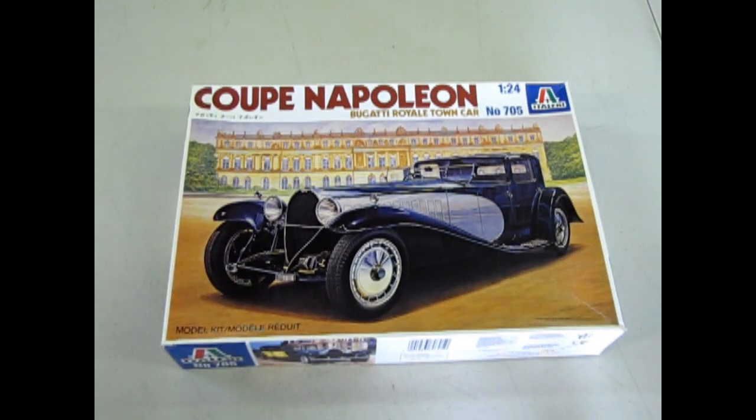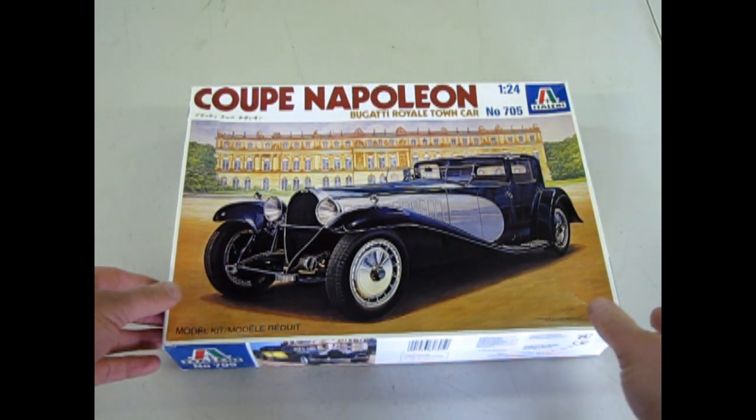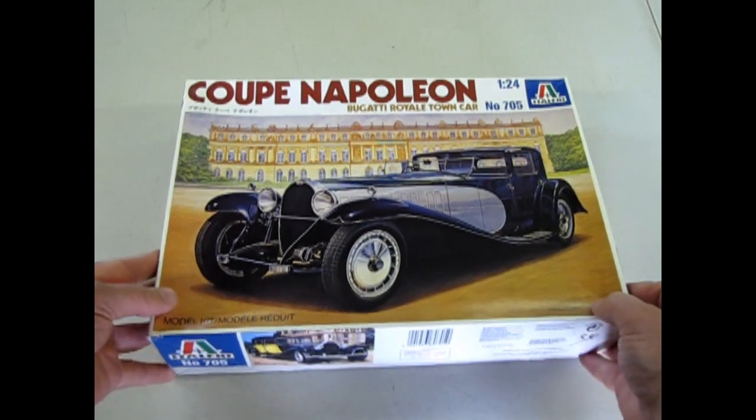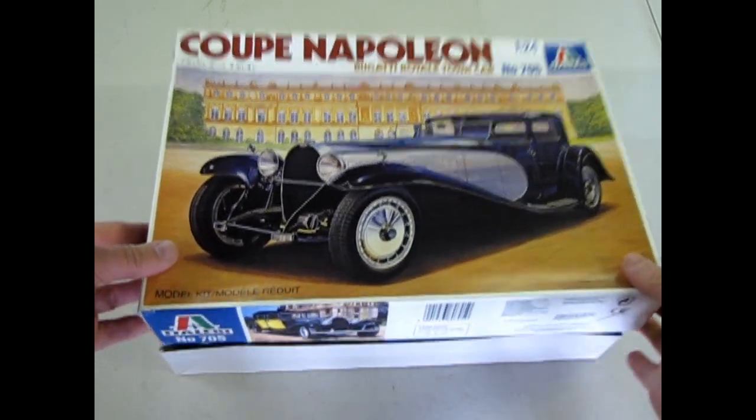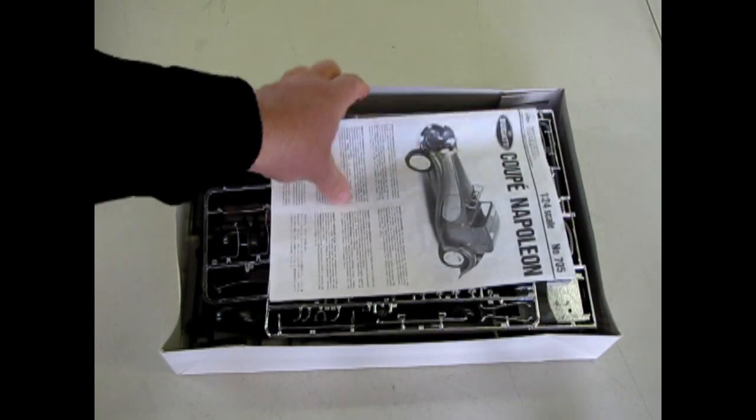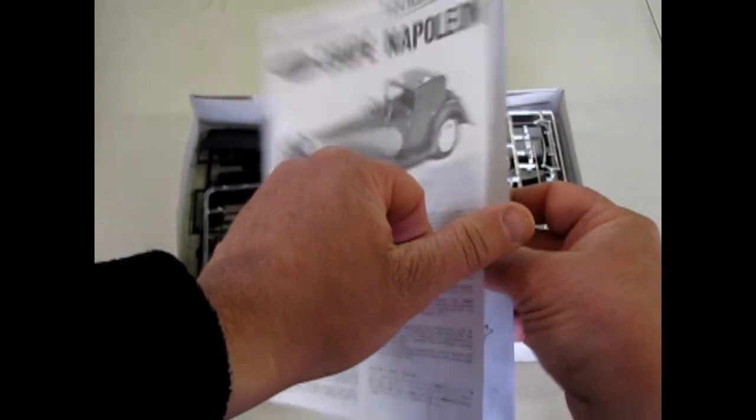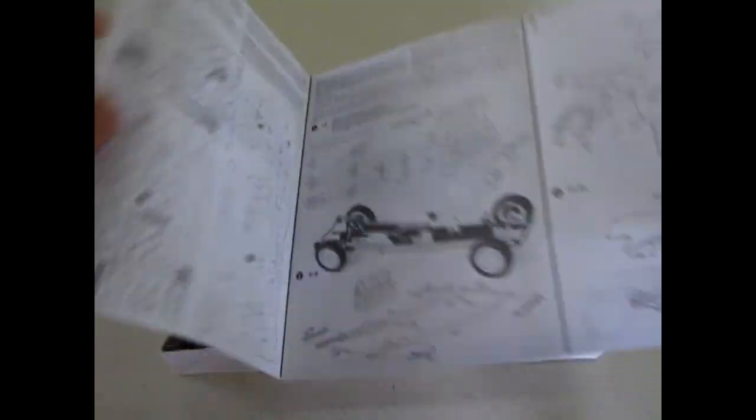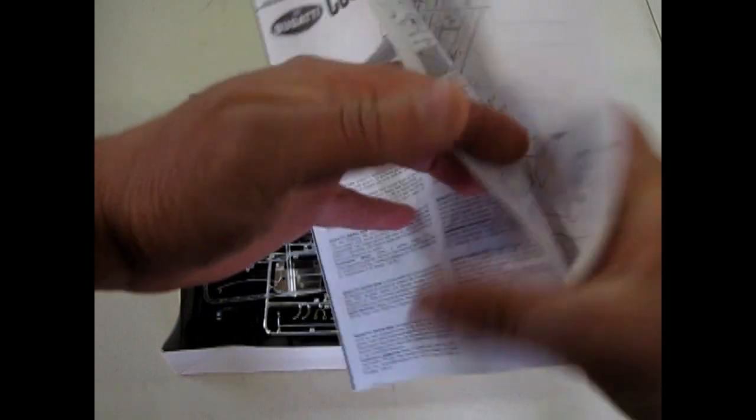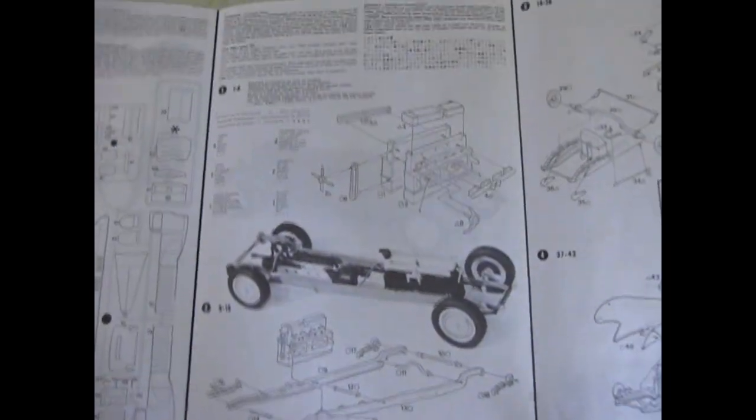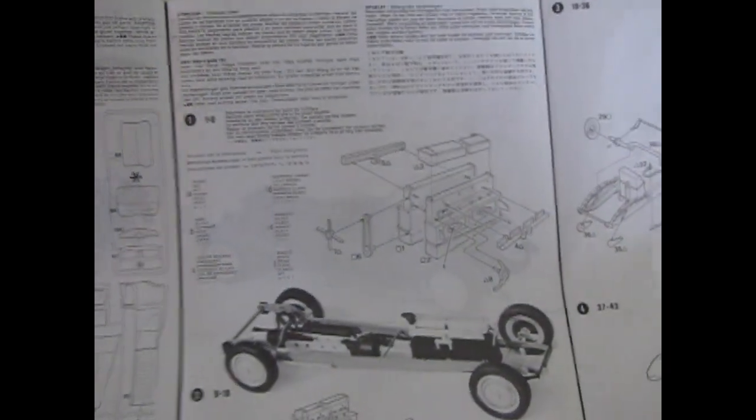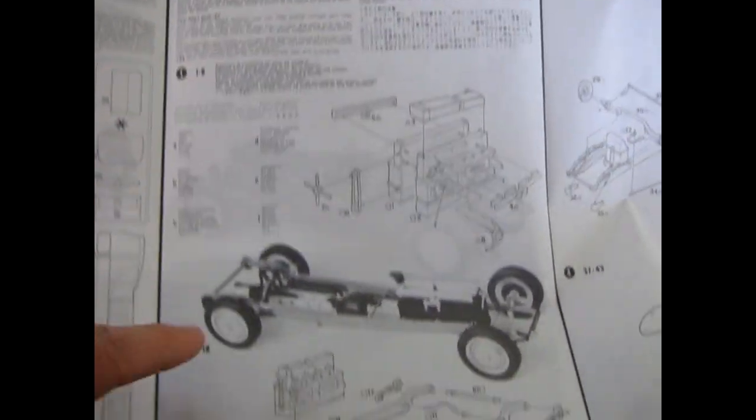And here is the Coupe Napoleon. Nice luxury car from Italieri in 1:24 scale. And we'll just open the box on this beautiful piece of artwork. And here's the instructions. As you can see, there are a lot of parts to this kit. I always end up opening these from the back, somehow. There is the engine there.